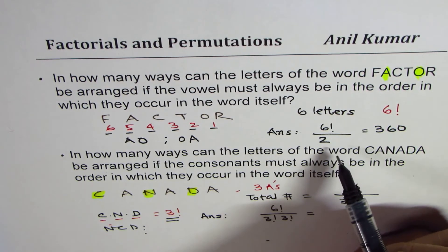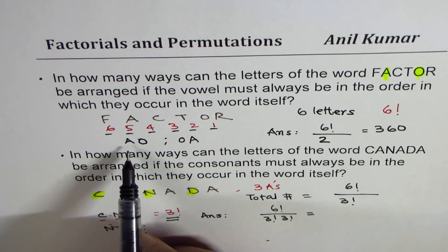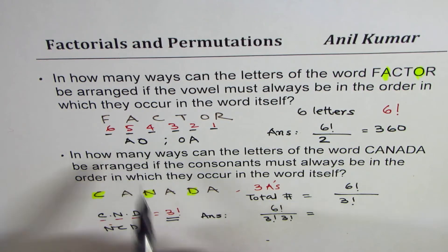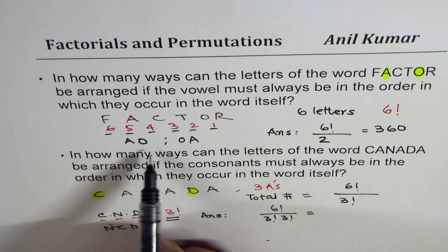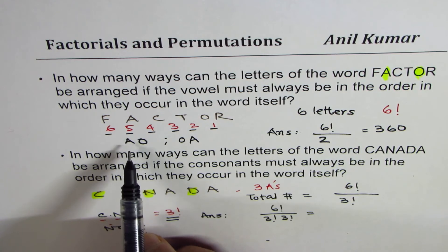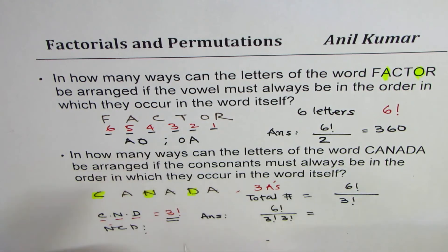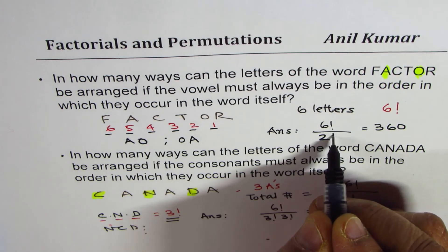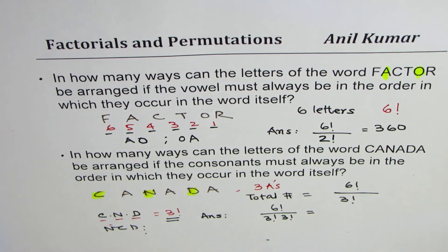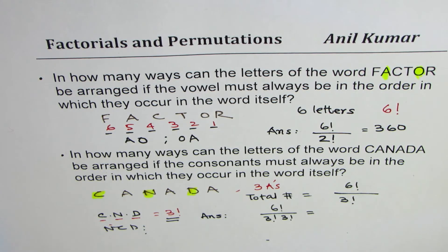Getting back to the previous one, we could have generalized the formula now. Again, these two letters, A and O, can be arranged in 2 factorial ways. So it was better to use 2 factorial here. So now you can generalize and write down solution of any question in which we have to maintain an order.